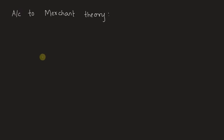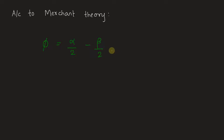According to Merchant's theory, the shear angle φ is given as: φ = α/2 − β/2 + π/4, where α is the rake angle and β is the friction angle. This is the expression for shear angle.